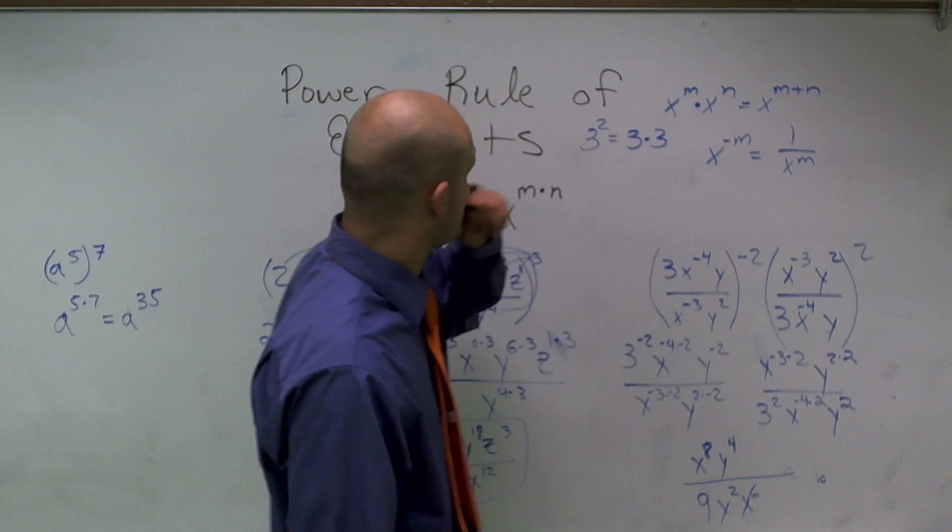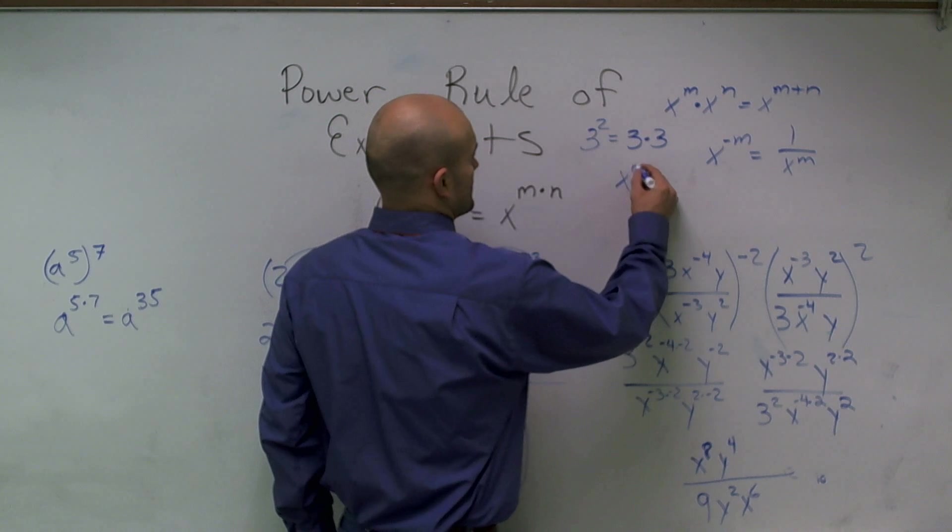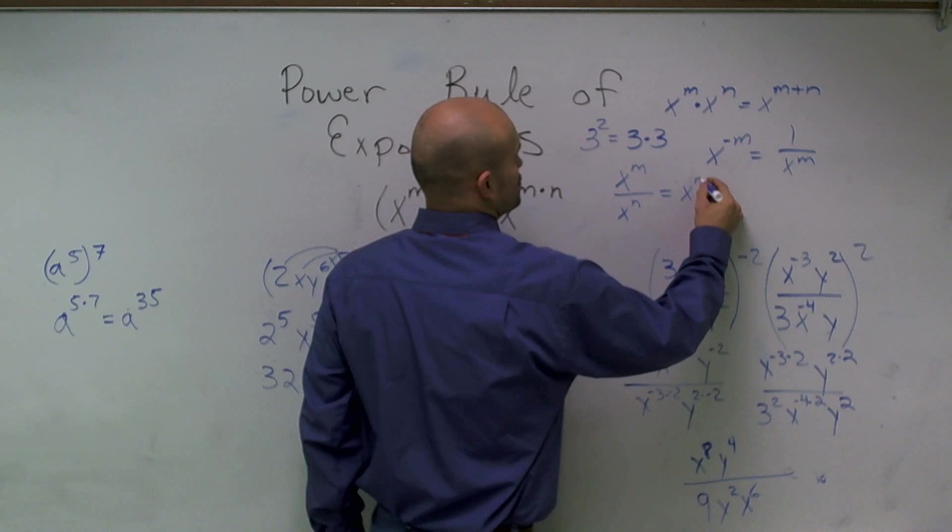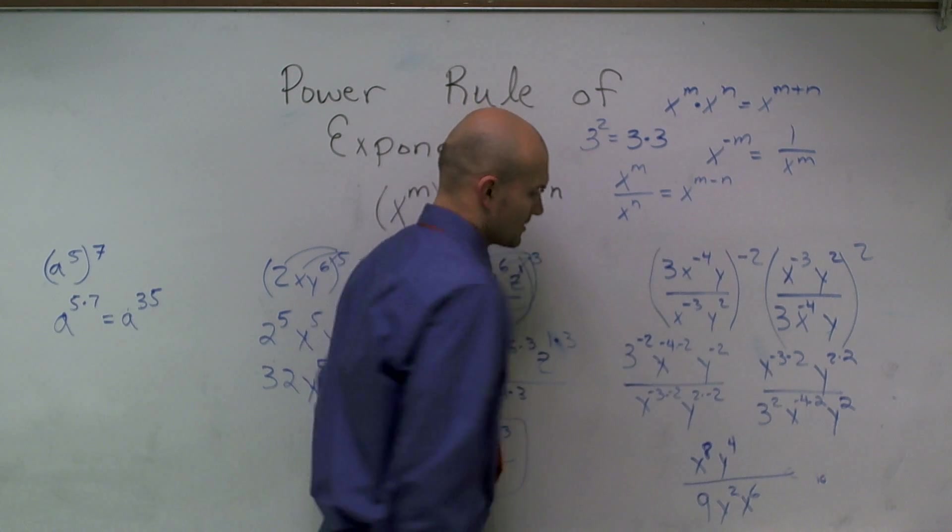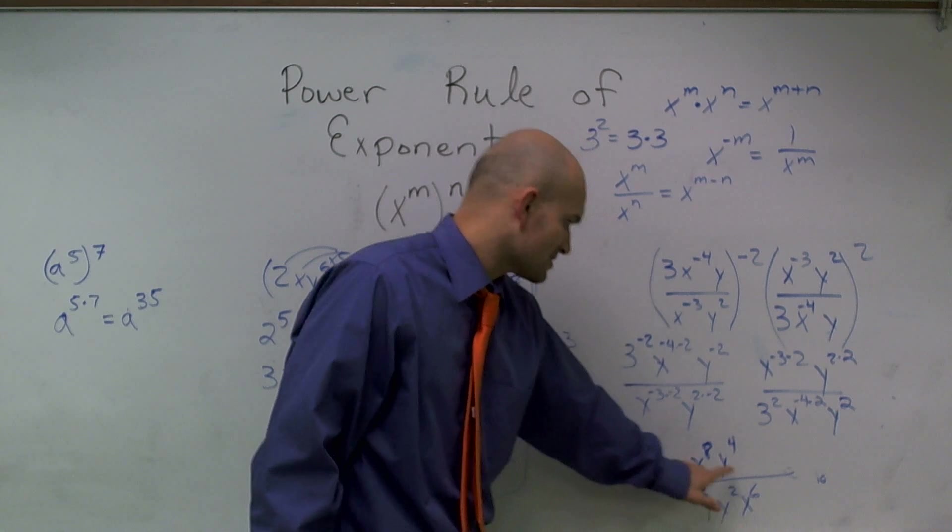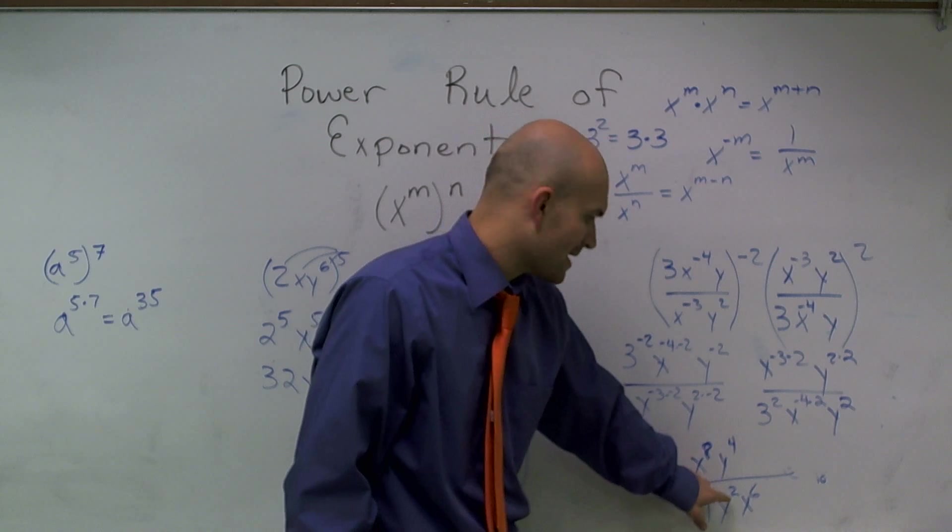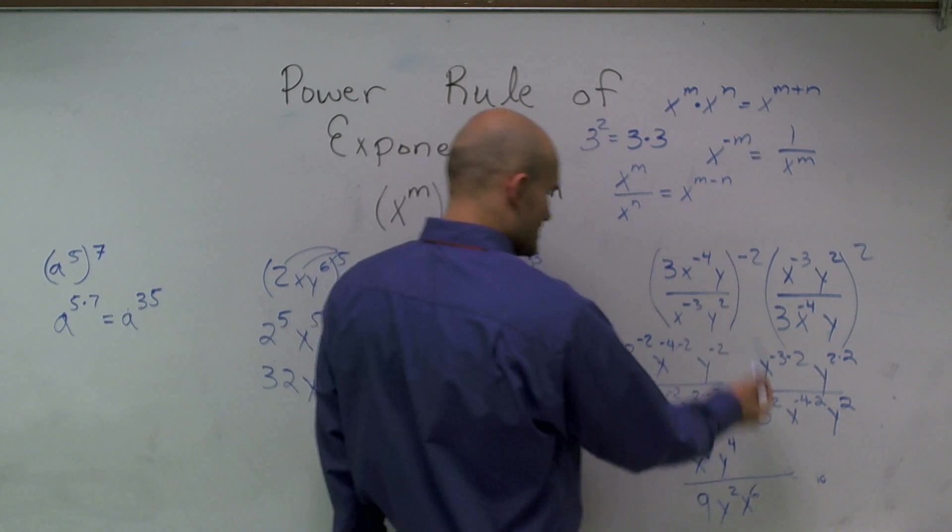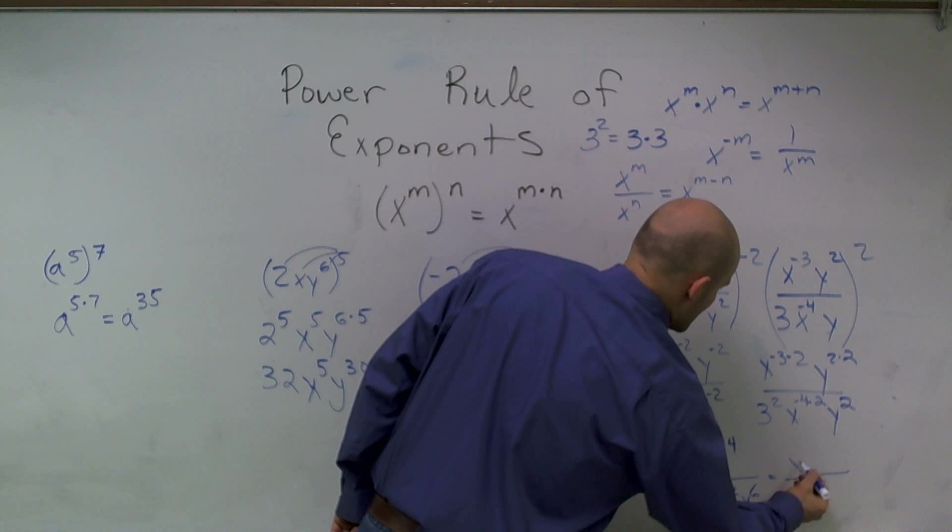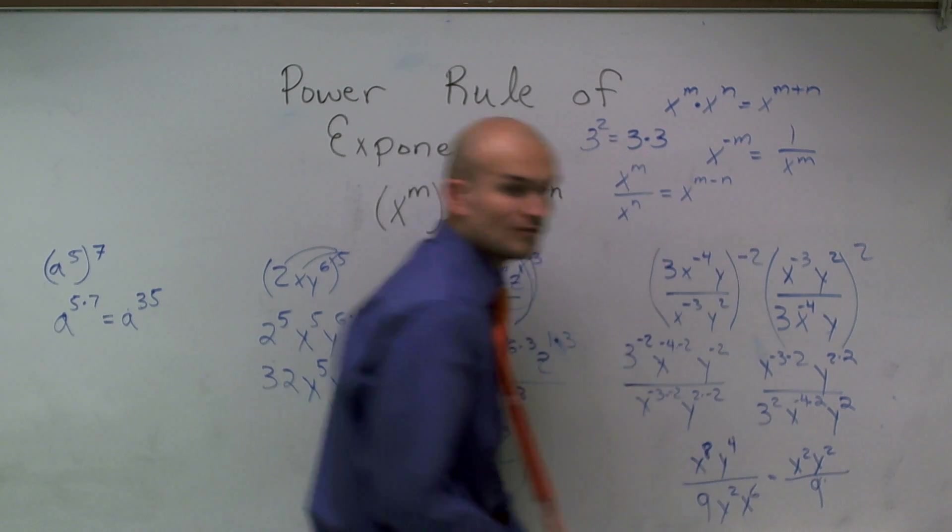So now I can simplify these by using my quotient property. Whenever I have an exponent divided by another exponent, that means I can subtract those two exponents. So here I have x to the 8th minus x to the 6th, so that's going to leave me x squared, and this will leave me y to the 4 minus 2, which would be y squared. So my final answer would be x squared y squared all over 9.